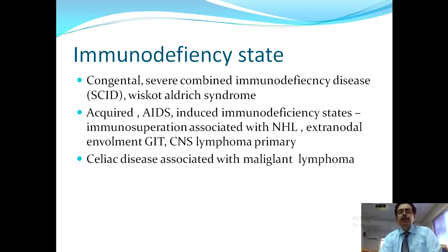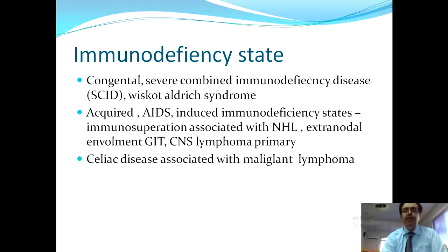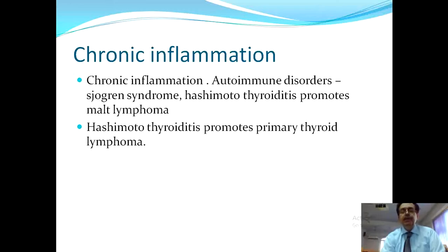Acquired immunodeficiency states — AIDS — are associated with NHL with extranodal involvement, especially the GI tract, and primary CNS lymphomas. Celiac disease (non-tropical sprue), presenting with diarrhea and malabsorption, can also transform into malignant non-Hodgkin lymphoma. Chronic inflammation from autoimmune disorders like Sjögren's syndrome and Hashimoto's thyroiditis promote MALT lymphoma.